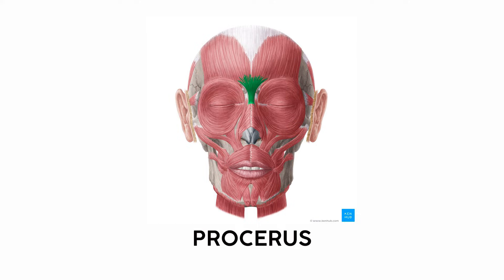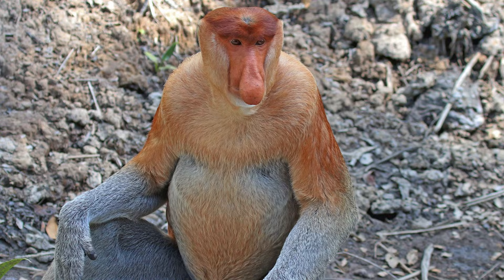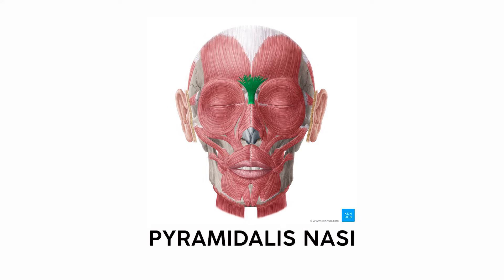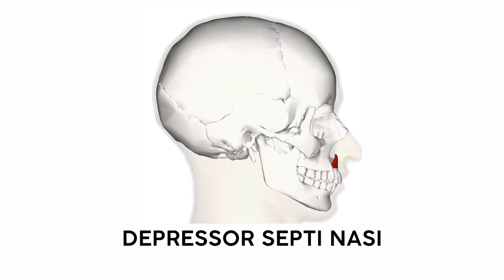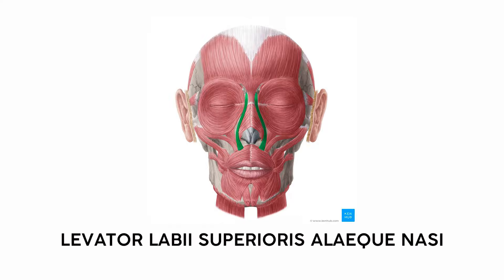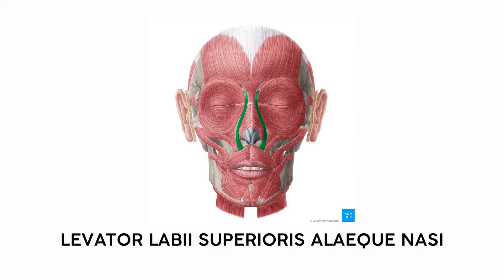On top of the nasalis is the long procerus muscle — a Latin giveaway since it means tall or extended. You could also remember it as reminding you of the proboscis monkey with the big nose; it's also sometimes called the pyramidalis nasae, the pyramid-shaped muscle on the nose. Moving down the face, the depressor septae nasae has the memory device built in: it depresses, or pulls down, the septum. Finally, the muscle with the longest name of any muscle in the body — the levator labii superioris alaeque nasae, or LLSAN — lifts the upper lip and the wings of the nose, running from the zygomatic arch all the way down to the upper lip.